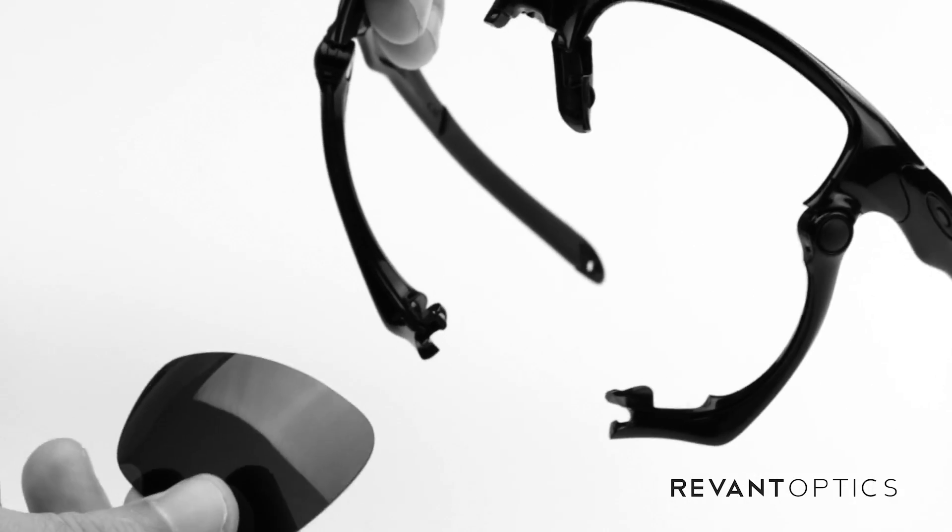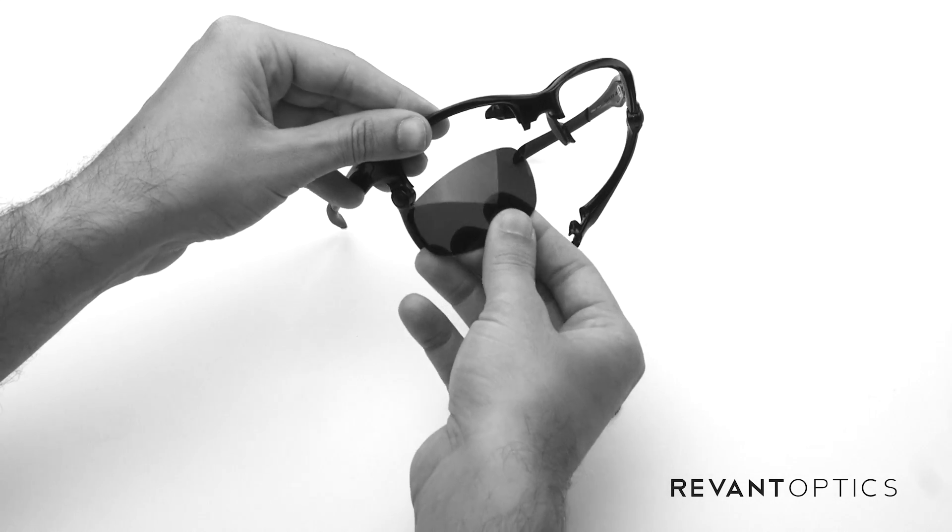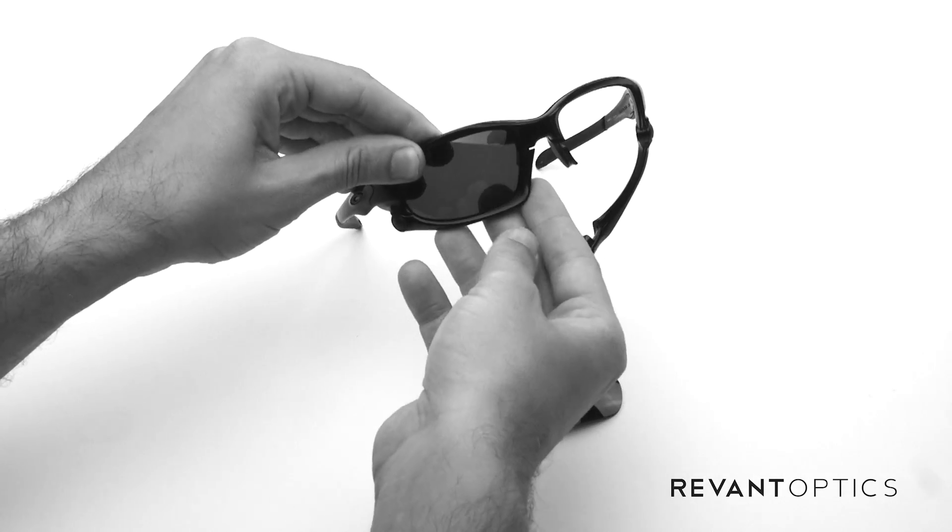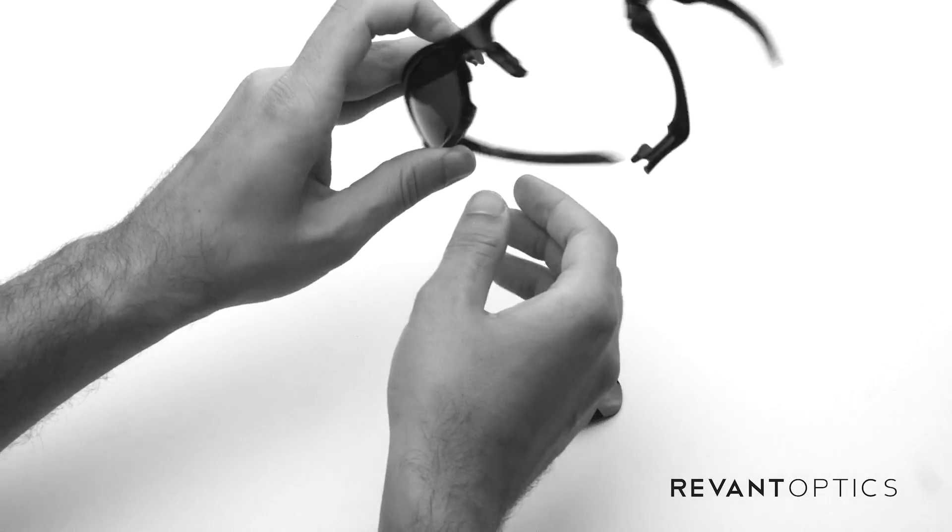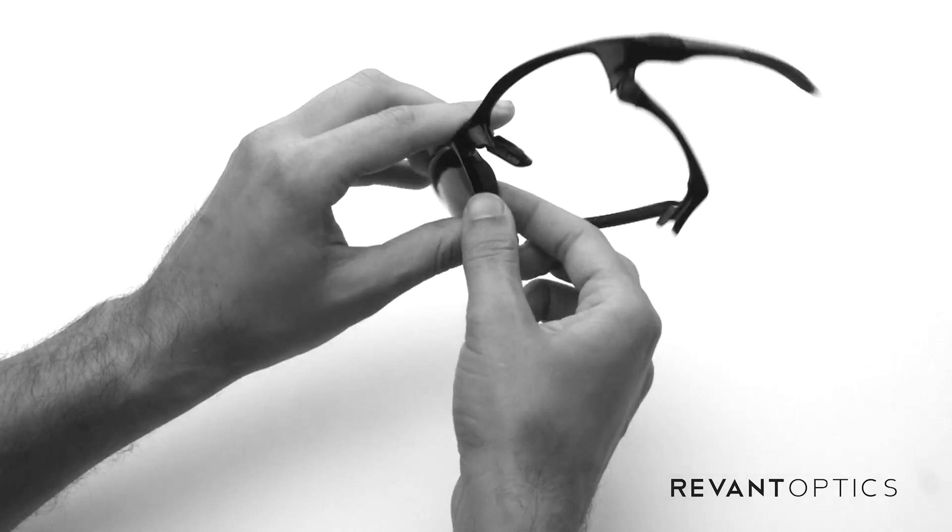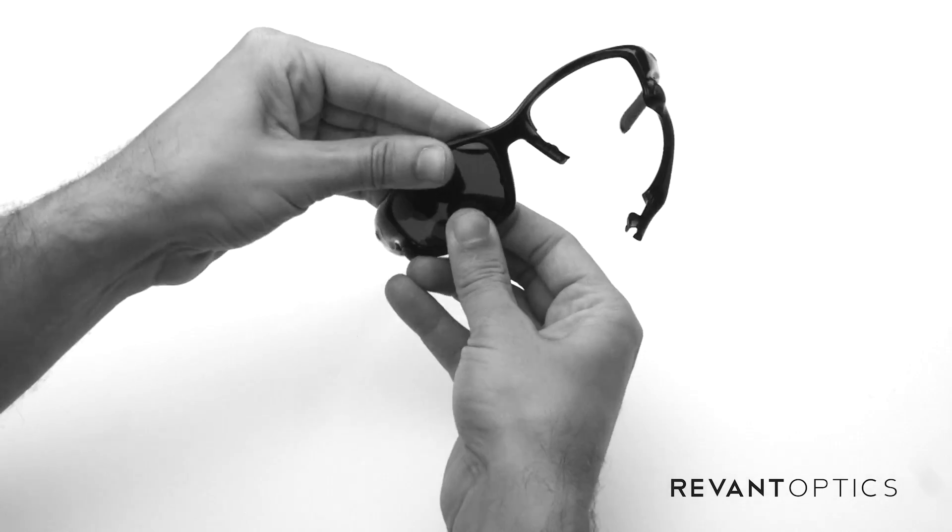Slide the lens out, and then to install the lens, you're just going to slide it in the groove here on the top half of the frame and push up. Make sure those line up there, and then push on the nose piece until it pops in place. That should make the lens nice and secure.